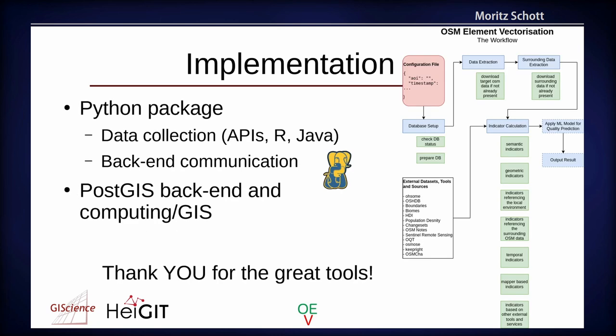Now for implementation — it's mainly focused on a Python package. Python is mostly used for data collection, querying different APIs, calling different programming languages, all handled centralized in the Python package. The main GIS work or main computing is done in the backend — in the PostgreSQL database. At this point, it's time to say thank you for these great tools. PostgreSQL is just an amazing thing that can replace any GIS tool in my opinion, at least for this specific case. The workflow is mostly linear: collecting data, transforming it, then calculating things on it. At the end you get your output from the tool.